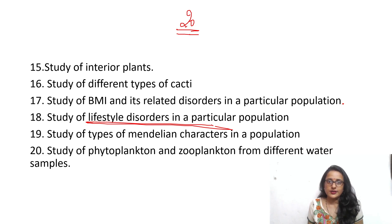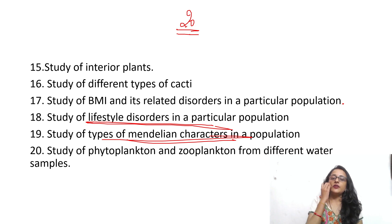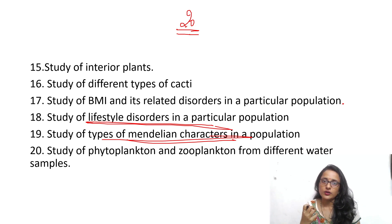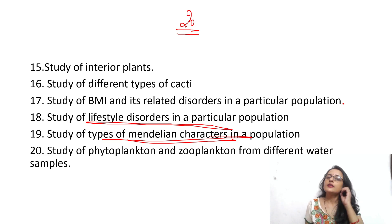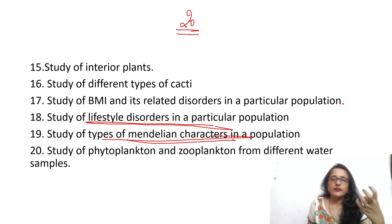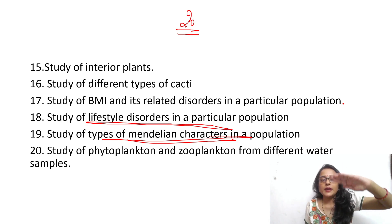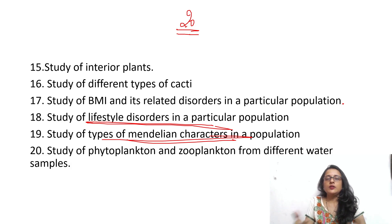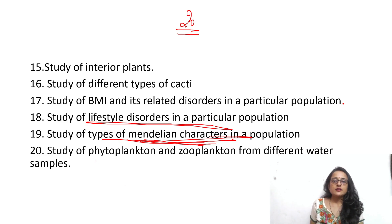Study of Mendelian characters in a population is another survey-type project. Make a list of human Mendelian characters — dominant and recessive ones — such as attached versus free earlobes, presence of freckles, or widow's peak. Then go survey a population to find out which dominant and recessive Mendelian characters are present and at what frequency.